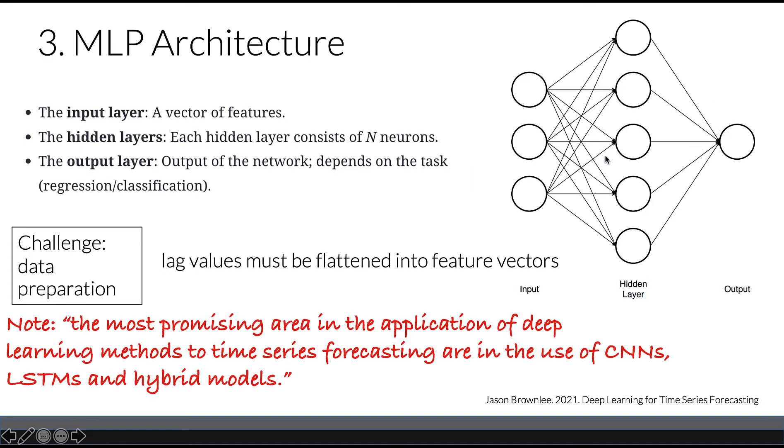MLP architecture has an input layer, this is a vector of our features, a hidden layer, and output layer, which depends on the task, whether it's regression or classification.